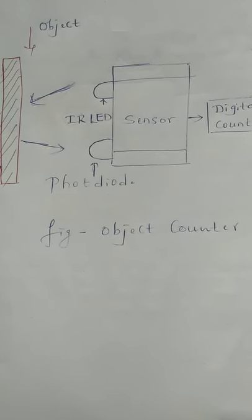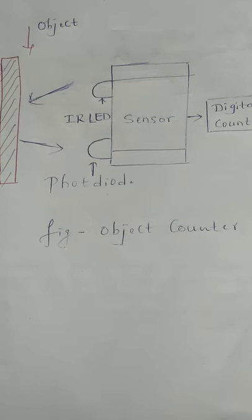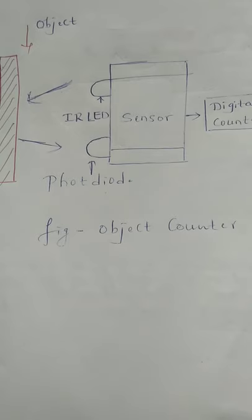So chapter number 5, industrial measurement and industrial applications. Object counters are used for counting the visitors, products, vehicles.